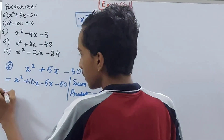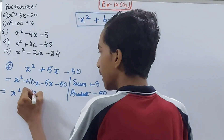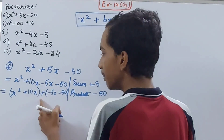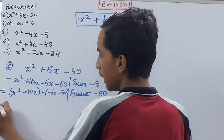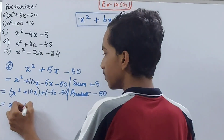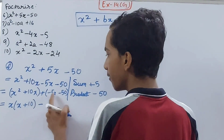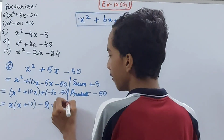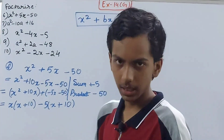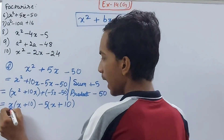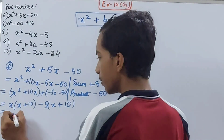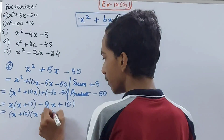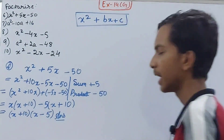So 10 into minus 5 is minus 50, and 10 minus 5 is plus 5. Now group it: x squared plus 10x in one group, and minus 5x minus 50 in another group. Take x common to get x plus 10, and take minus 5 common to get x plus 10. Taking x plus 10 common from both groups gives the final answer: x plus 10 into x minus 5.